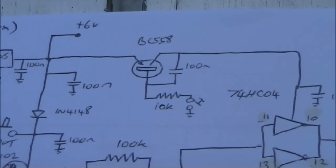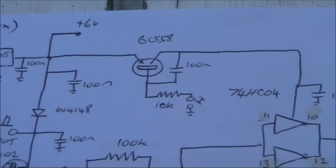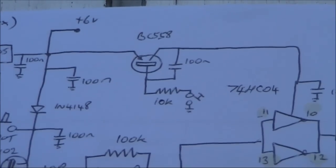When the base is grounded through a 10k resistor, then voltage appears on the collector. And that goes to subsequent stages.